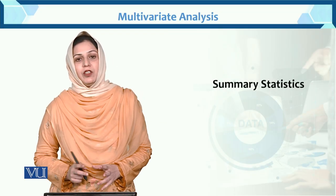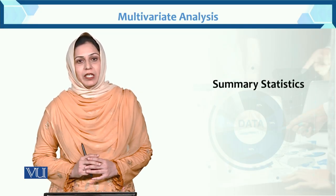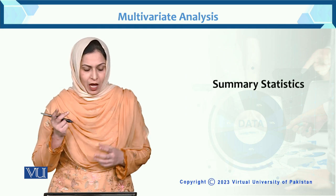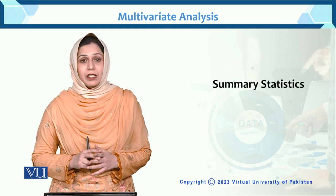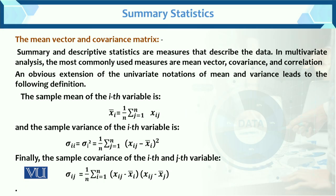Dear student, as we know the idea of multivariate analysis, the question arises: how to find the descriptive statistics or summary statistics? The mean vector and covariance matrix in multivariate analysis — how to find them? The summary statistics are descriptive statistics that describe the data. In multivariate analysis, the most commonly used measures are the mean vector, covariance matrix, and correlation.